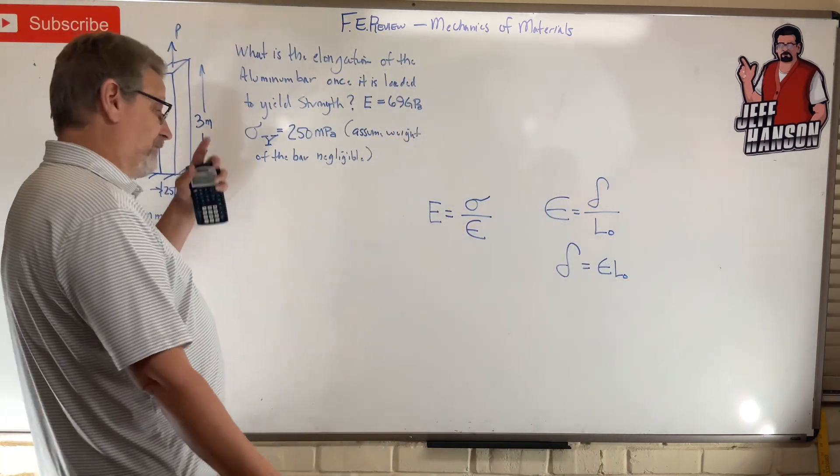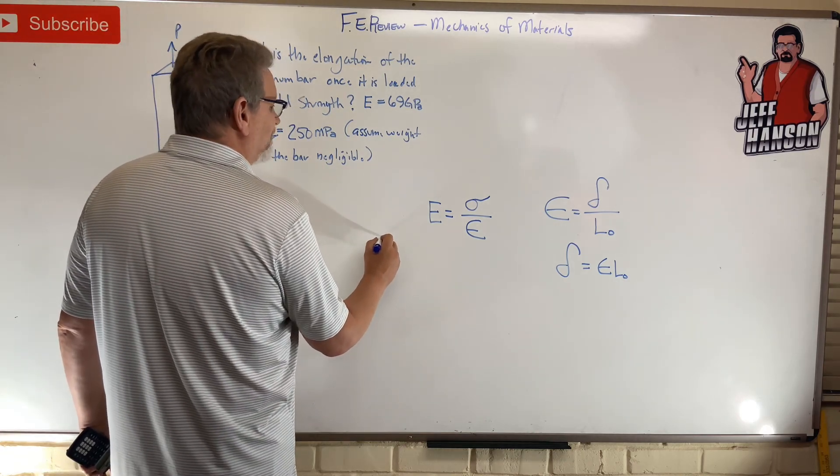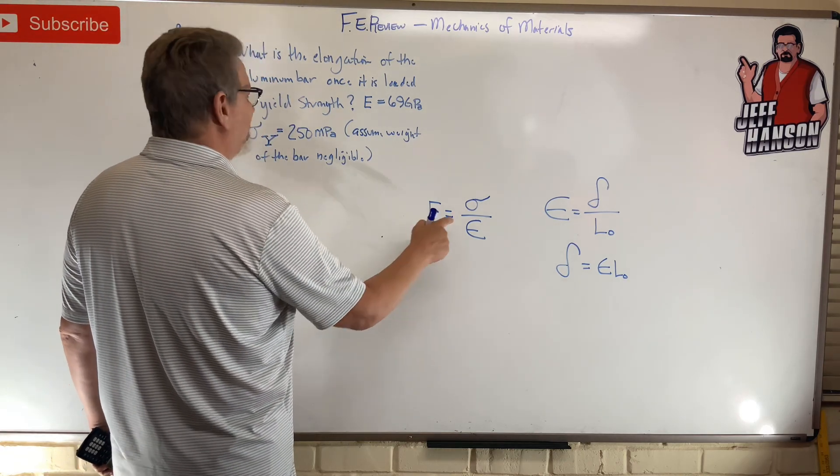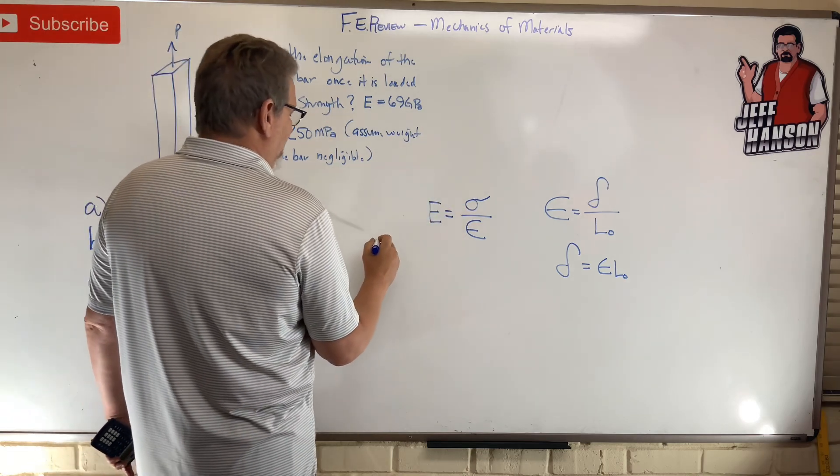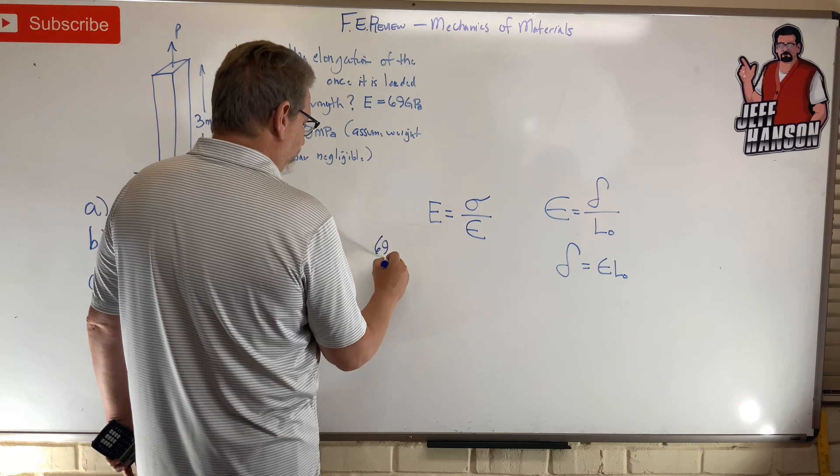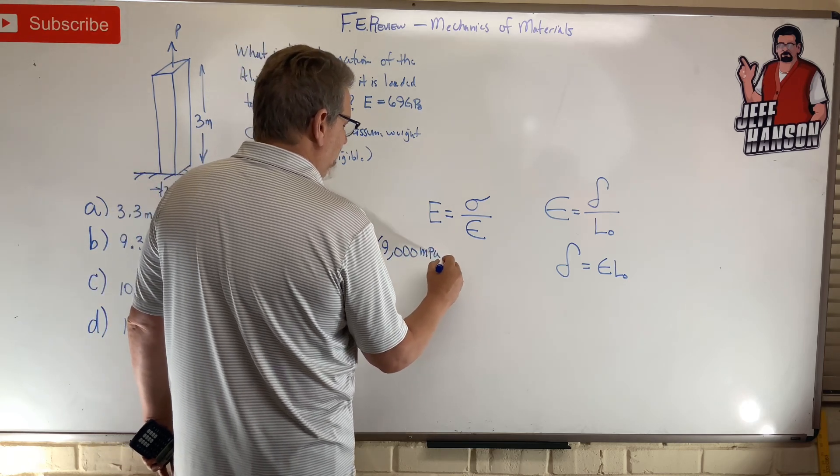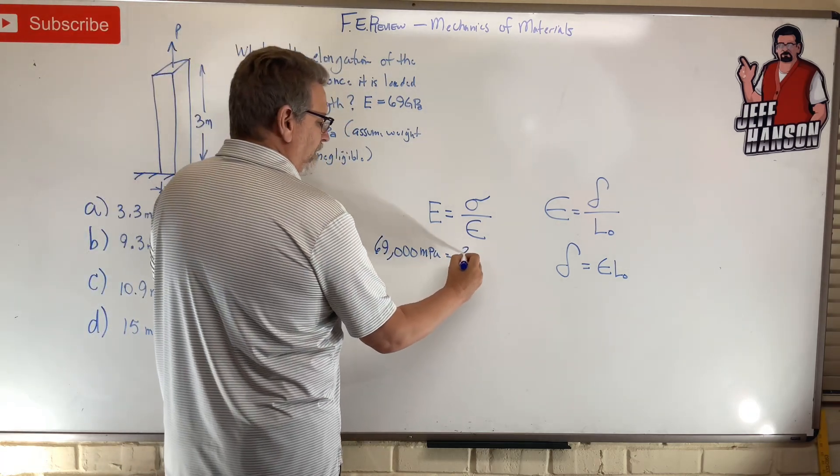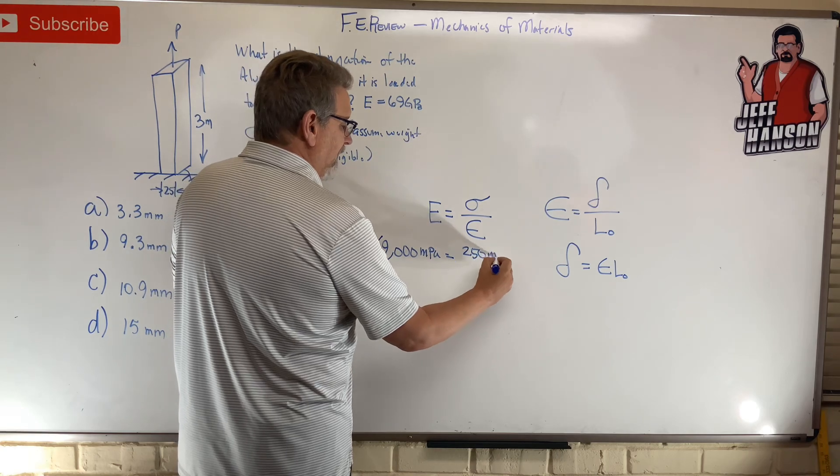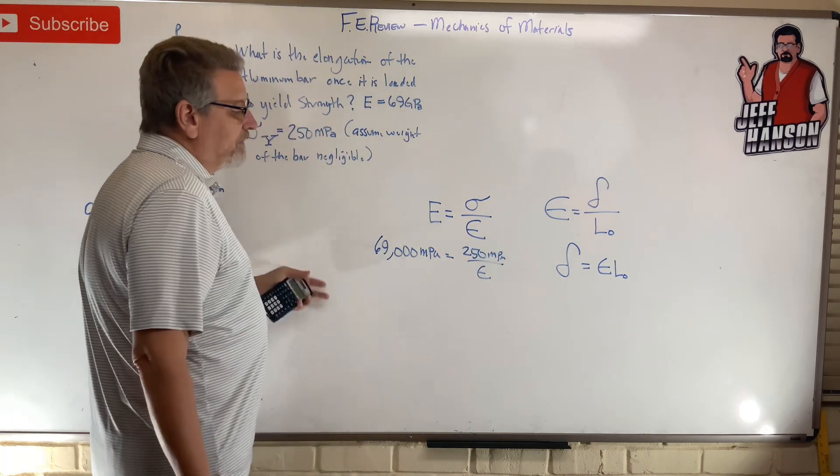So let's try that. We have 69 GPa. What is this? Oh, that's an MPa, right? So let's put that in MPa: 69 one-two-three zeros makes it an MPa. That equals sigma, which is 250 megapascals, 250 MPa, divided by strain. Because remember, strain is a unitless thing, it's like millimeters per millimeter, right?